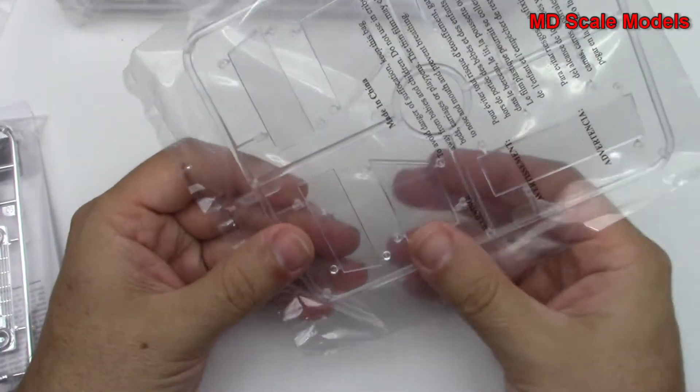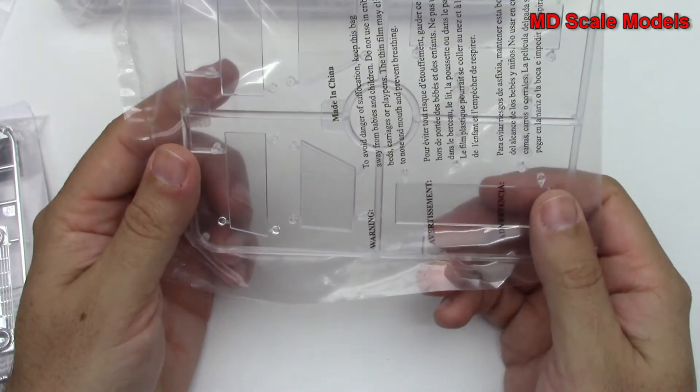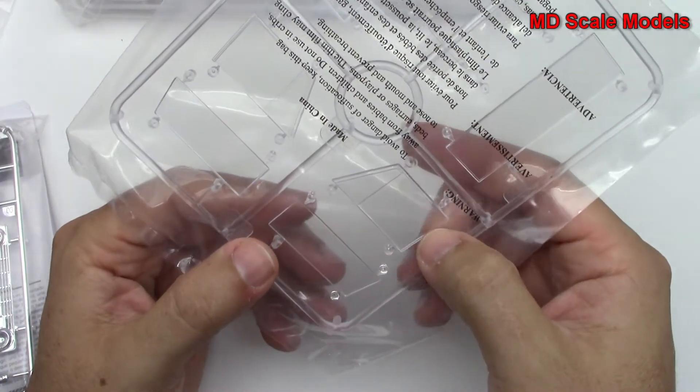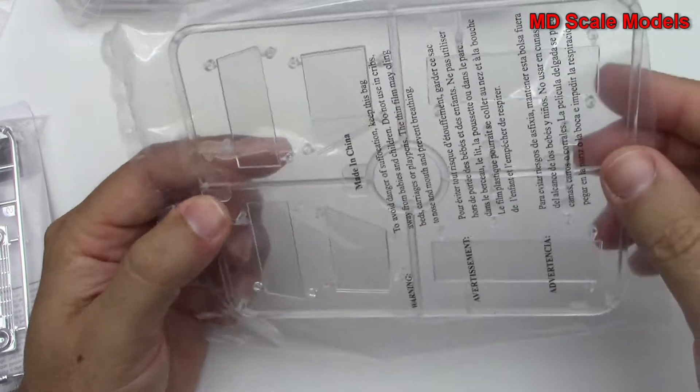Next we've got our glass. Looks like we've got front and rear as well as side. It's all fairly well molded, nice and clean.